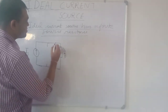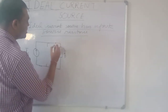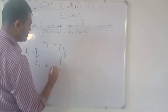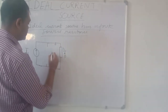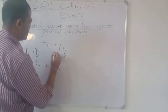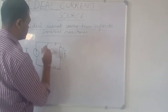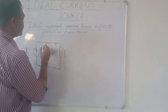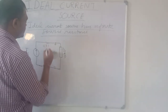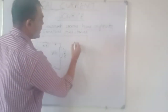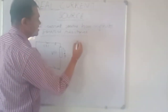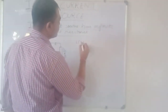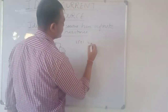The voltage across the load is Vt, and current It is flowing through it. So It will always be equal to Is.